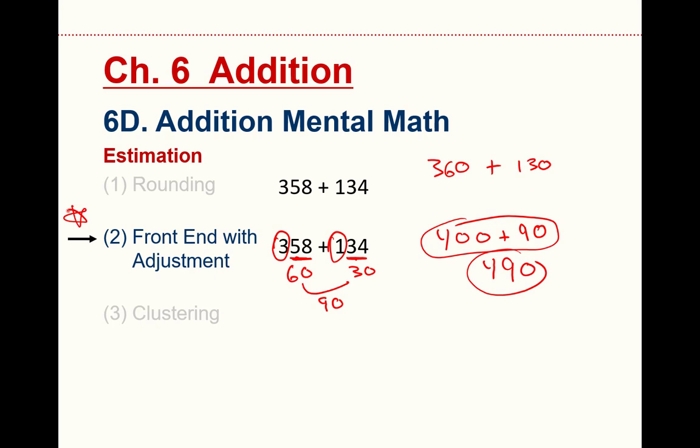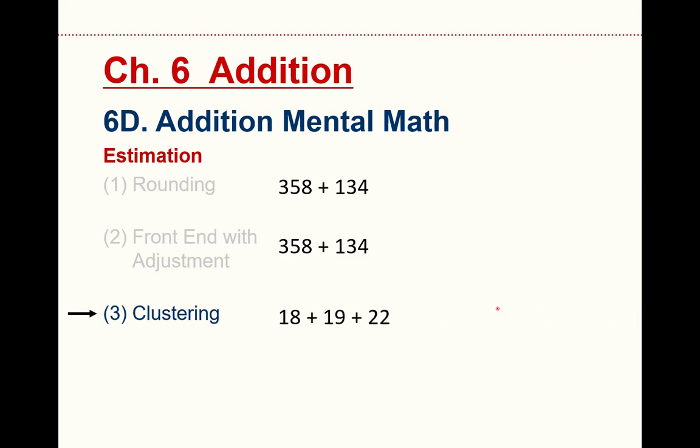The last technique is called clustering. This is an example when you have more than two numbers. If you have a few numbers that are close together, these three numbers, they're kind of close to 20, right? So it's almost like I could add 20 plus 20 plus 20. Approximately. And 20 plus 20 plus 20, well, that's just 3 times 20, which is 60.